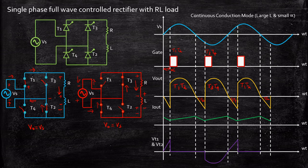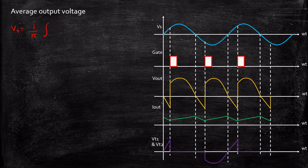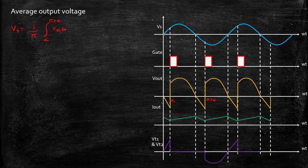Now let us take a look at some important analysis. First, the average output voltage — this is very important for solving numericals, and it is better to understand how to derive it rather than just memorizing the expression. By the definition of average output voltage, Vout equals one over the total time period — that is one over pi. The integral limits are alpha to pi plus alpha, because one cycle starts at alpha and ends at pi plus alpha. So Vout = (1/π) ∫[α to π+α] Vm sin(ωt) d(ωt).